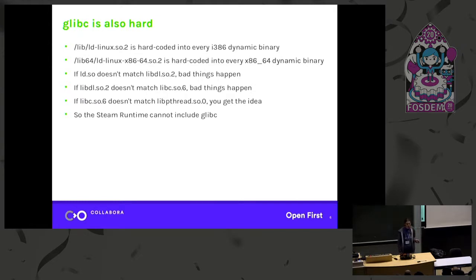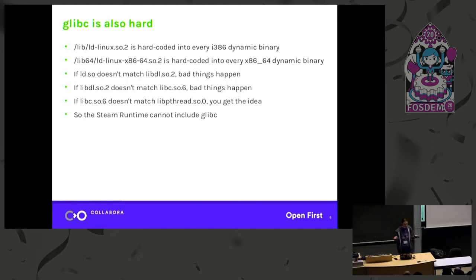Also, glibc is kind of fundamental — we can't really get away from that. It has the dynamic linker, which is what actually starts your program, and the path to that is hardcoded — it's part of the ELF headers of every binary. You can't change it; it's part of the ABI. It calls into libdl, which is the actual implementation of loading shared libraries. If they don't match, assumptions are going to fail — call this private function in libdl that does the stuff we want, oops it's not there; call this other one, oops it does something different. Bad news. Similarly, libdl is inextricably linked to libc, and libc is linked up with libpthread. If they don't match, you're in a situation the glibc maintainers have never tested. So we don't have graphics drivers in the Steam runtime, and we don't have glibc.